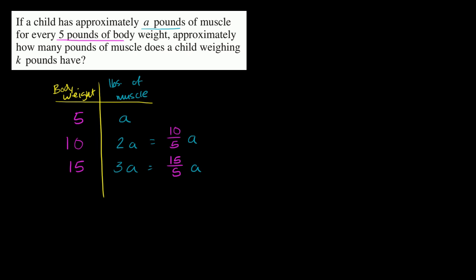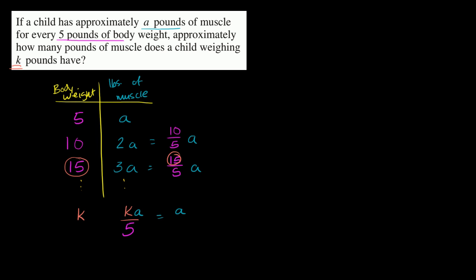So I think you see the pattern here. If a child has k pounds of body weight, you just take the pounds of body weight, divide it by five, and then multiply it times a. So it's going to be k over five times a, which you could write as ka over five, or a times k over five pounds of muscle.